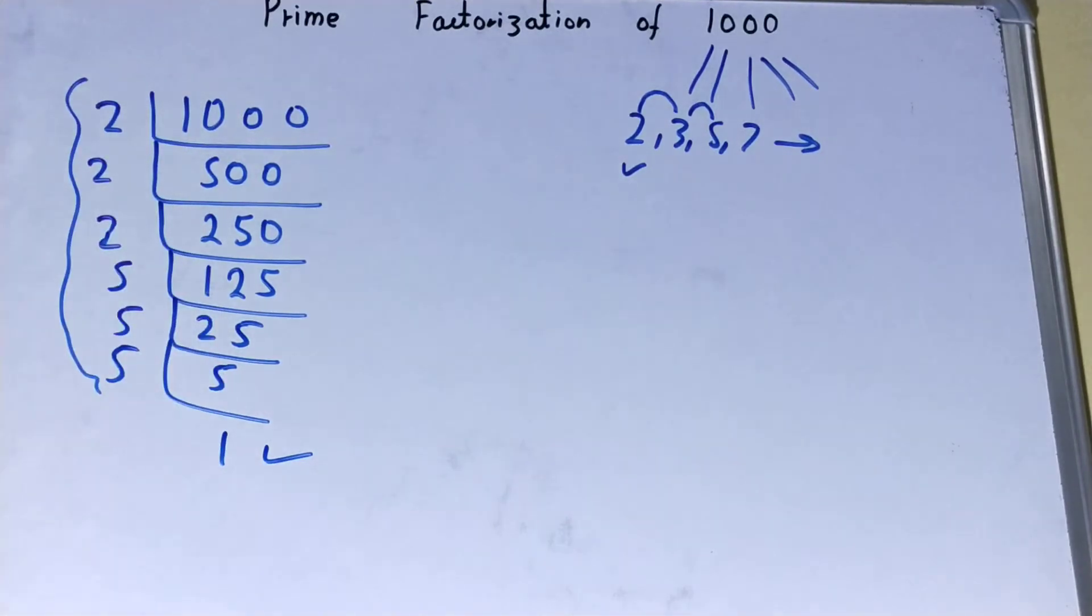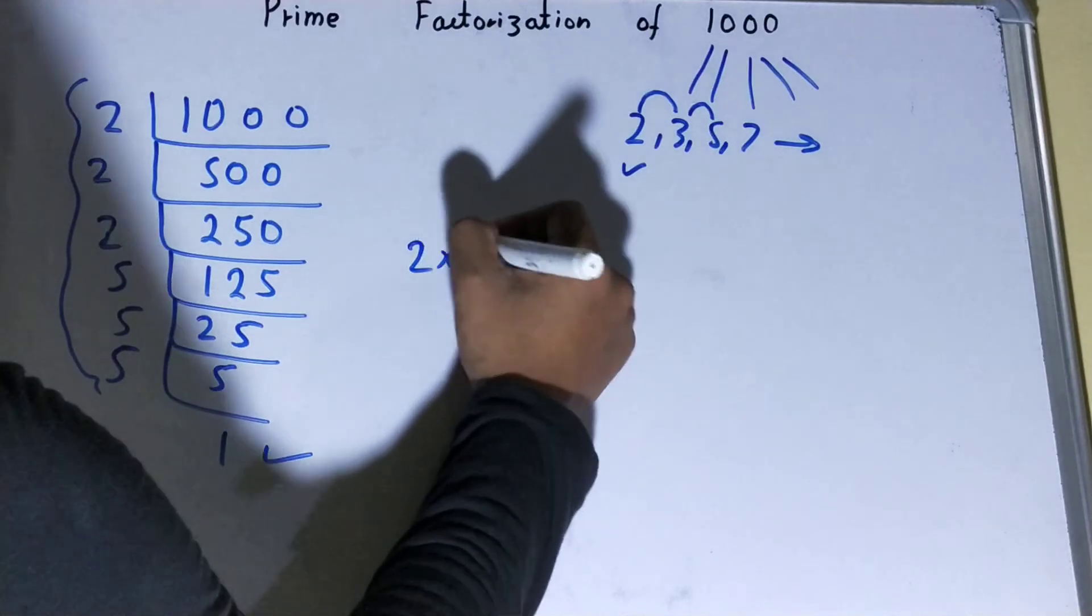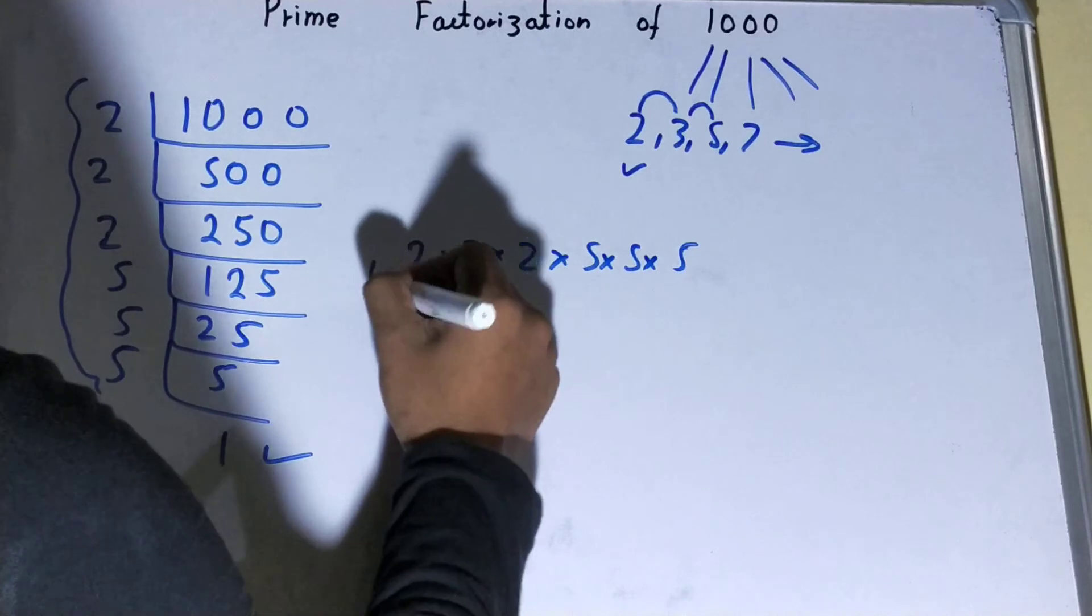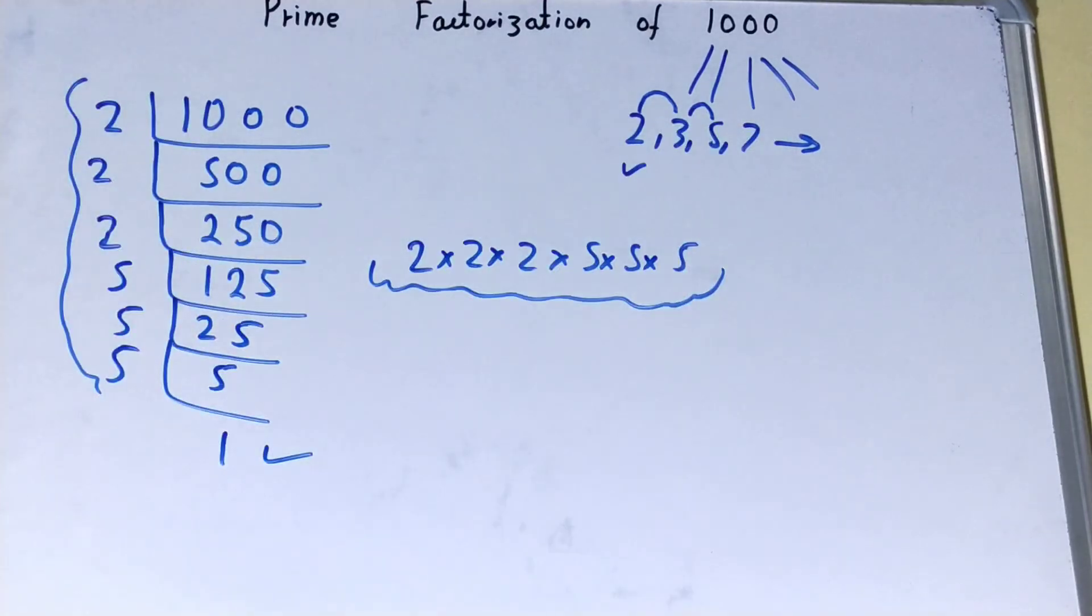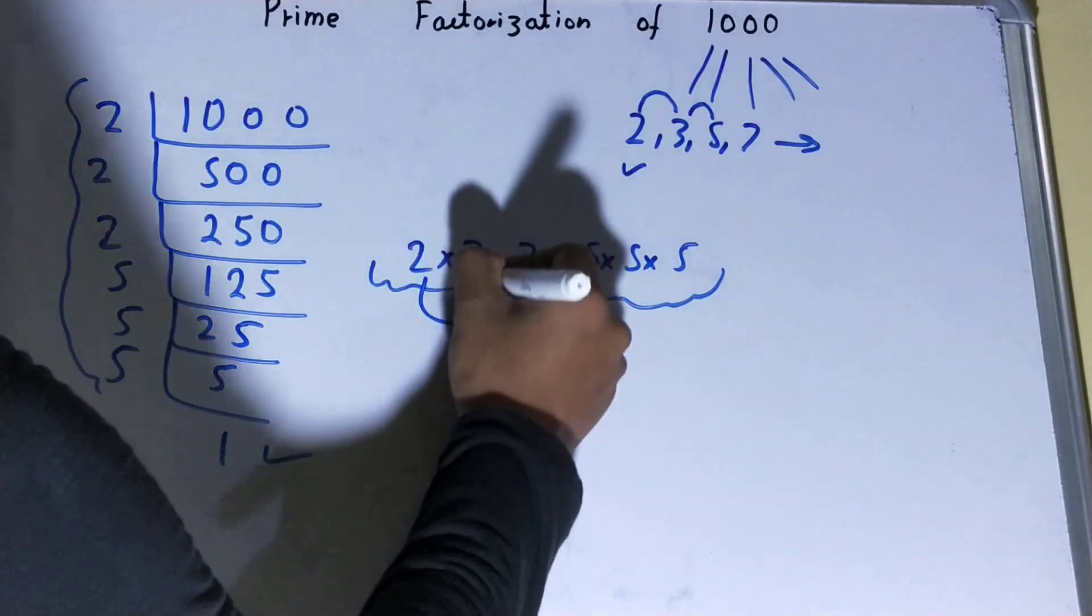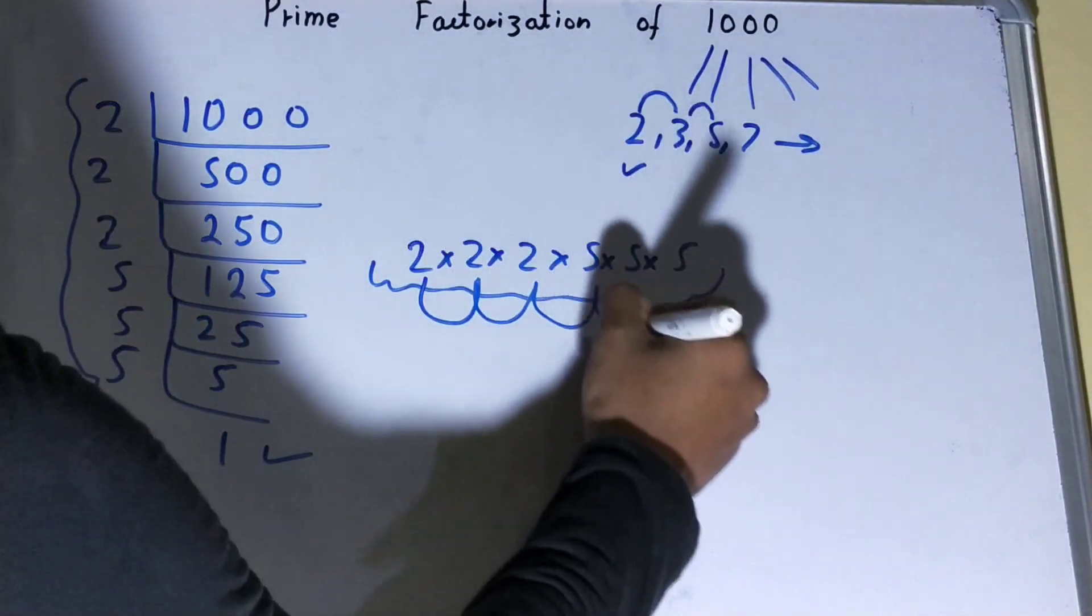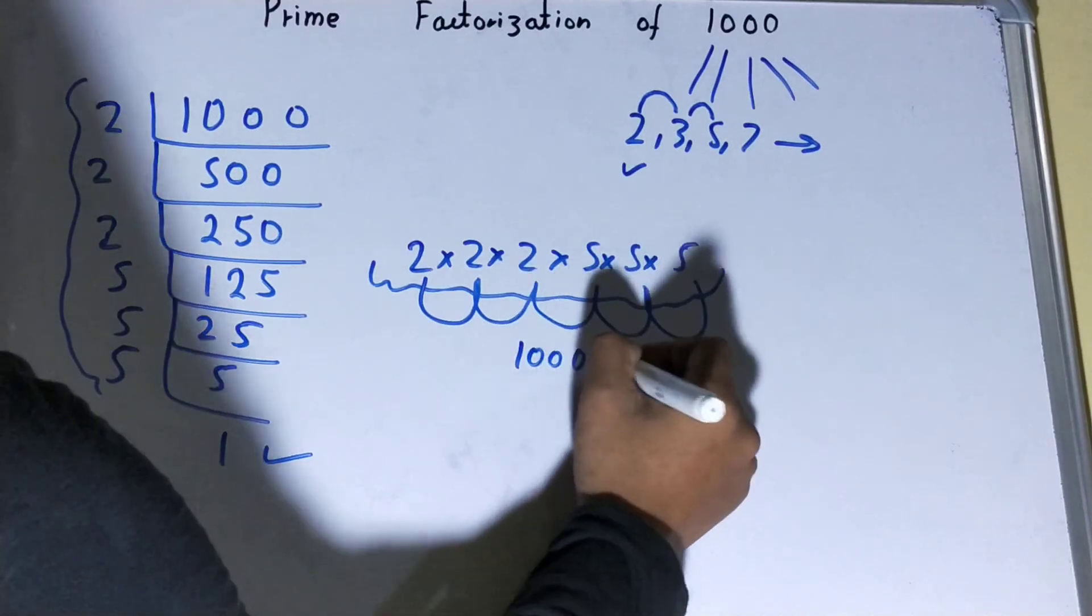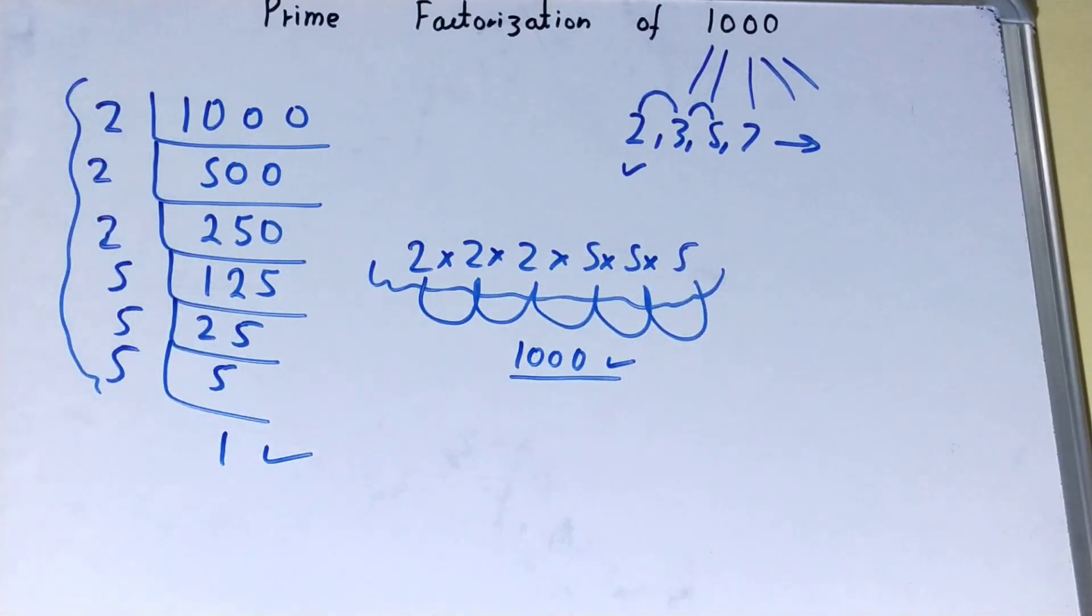If you want to verify whether it is right or not, you can multiply them. 2 × 2 is 4, 4 × 2 is 8, 8 × 5 is 40, 40 × 5 is 200, 200 × 5 is 1000. That is the number back again. If you're getting the number back again, that means your solution or calculation is fully correct.